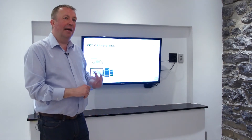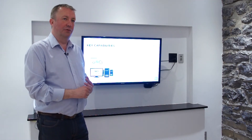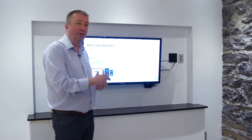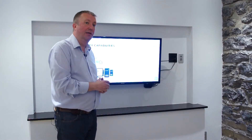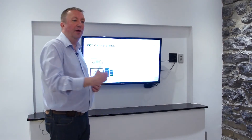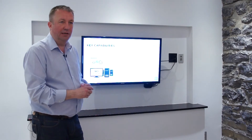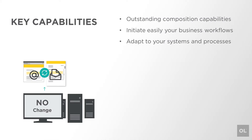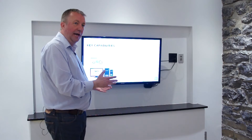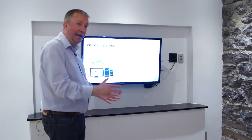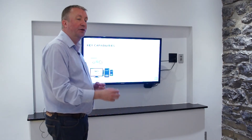So what are the key capabilities we're providing as part of this process? We're providing outstanding composition tools. These allow us to take any input from any place and make it ready to go through that workflow process. We're taking away lots of the manual handling, and we're making sure that mail you previously had to manually get into an envelope is now an efficient workflow process.